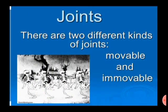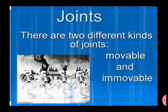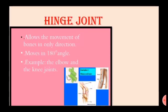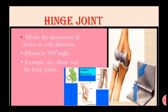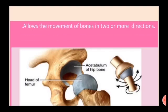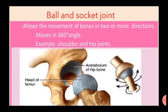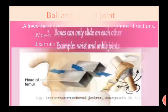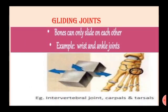There are two different kinds of joints: movable and immovable. A hinge joint allows the movement of bone in only one direction, at a 180-degree angle — for example, the elbow and knee. A ball-and-socket joint, such as the shoulder and hip joint, allows the bones to move in two or more directions, at a 360-degree angle. A gliding joint allows bones to only slide over each other — for example, the wrist and ankle joint.